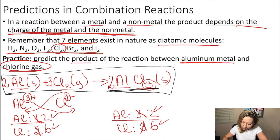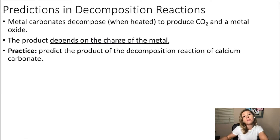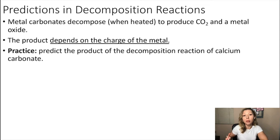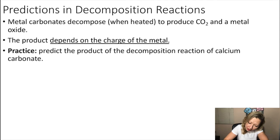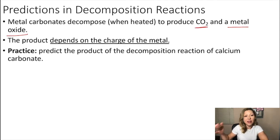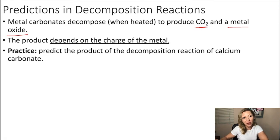How do we make predictions for decomposition reactions? When we have metal carbonates and they are heated, they always produce CO2 and the metal oxide as products. The product again depends on the charge on the metal. Let's try a practice problem.